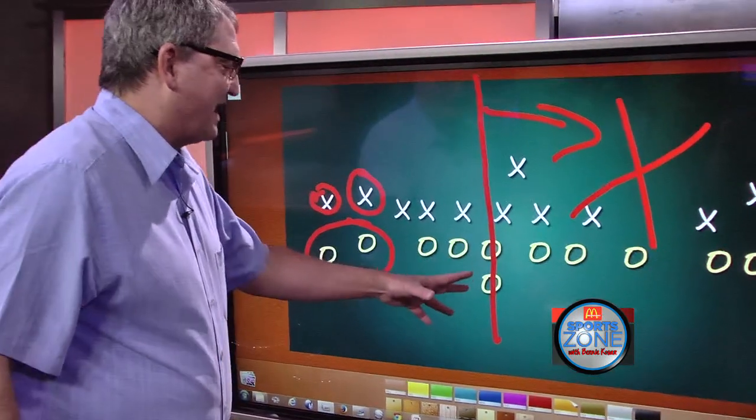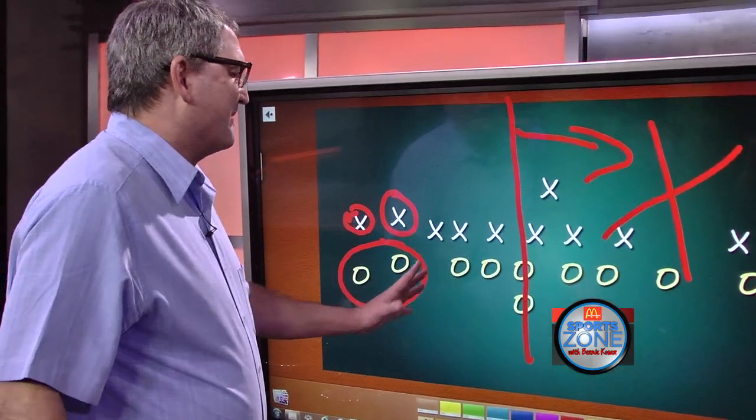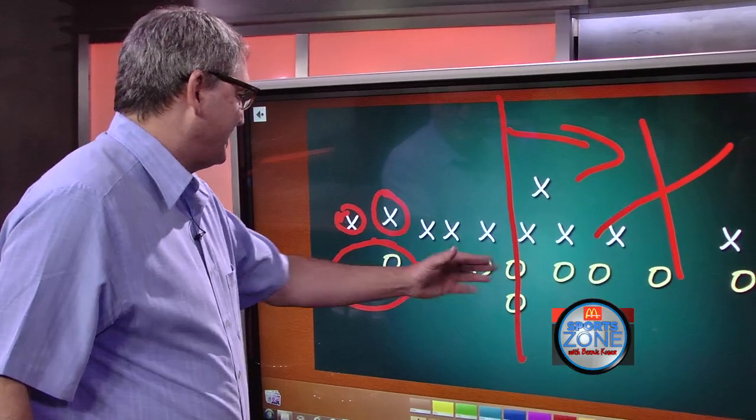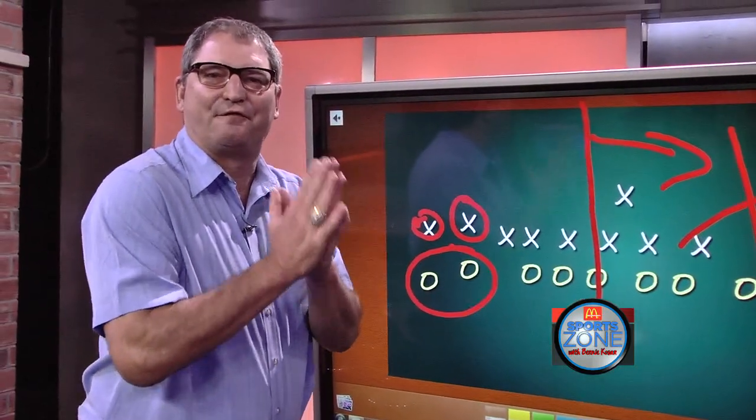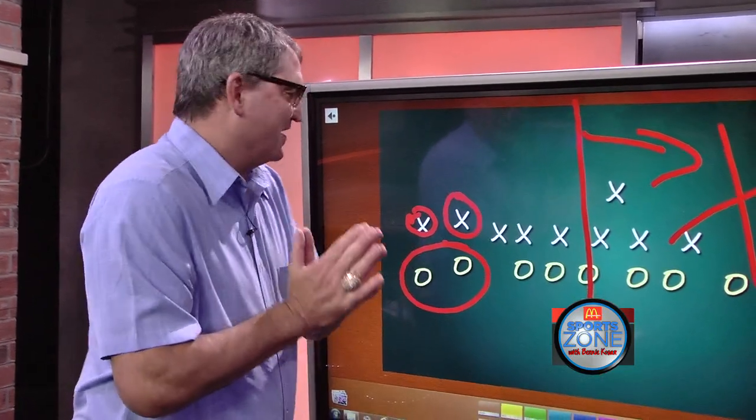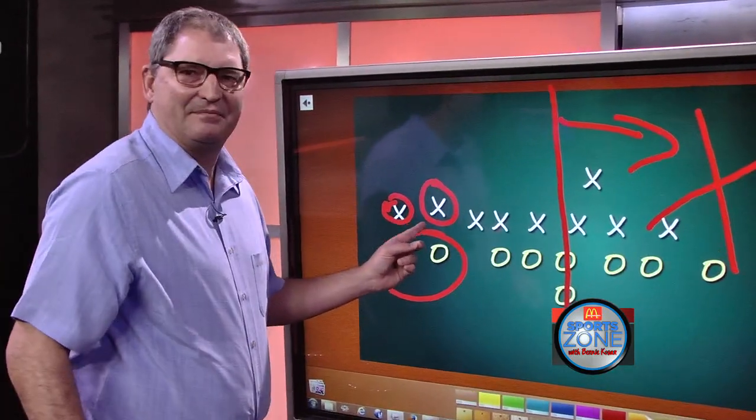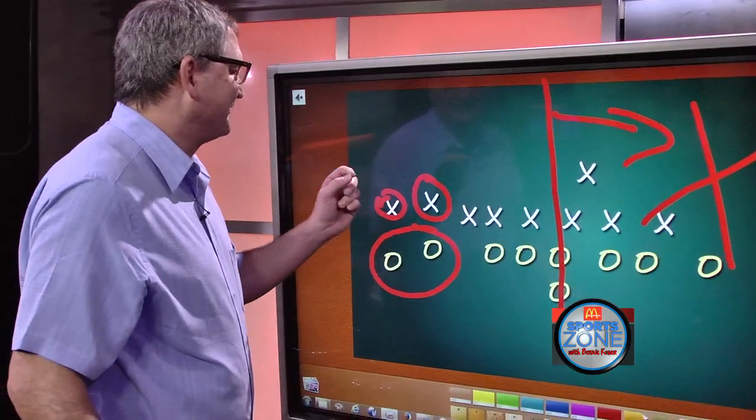Josh McCown, beautiful job today. But an 8-year-old could make this read. Now you have two running backs. Duke Johnson runs a 4-3-5 forty. You do not cover him one-on-one with a linebacker.